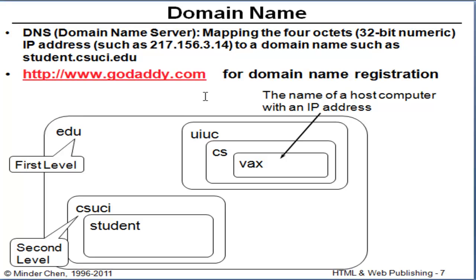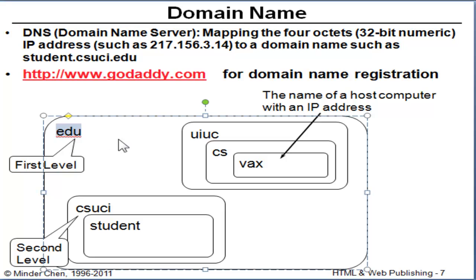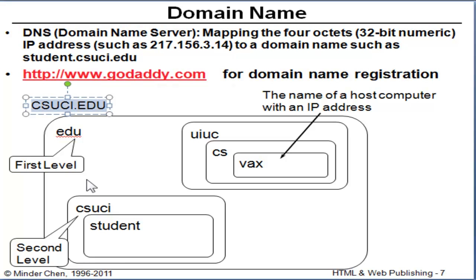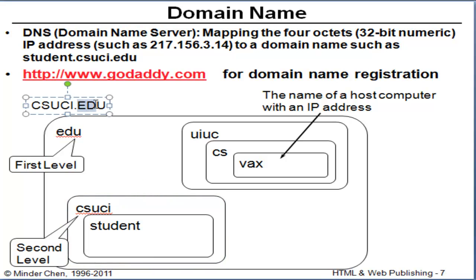The IP address is very difficult for human beings to remember, so there's a mapping between the 32-bit IP address to a so-called domain name. For example, let's use Channel Islands as an example. The CSUCI has a domain name, which is CSUCI.edu. The .edu is the so-called top-level domain name. When you register a domain name, you basically register a domain name like CSUCI and choose a top-level domain name. EDU is for educational institutions.